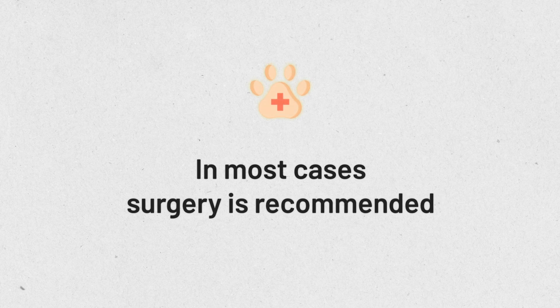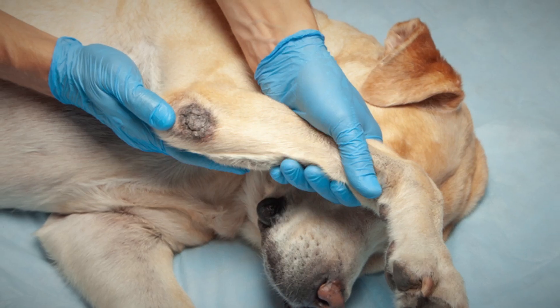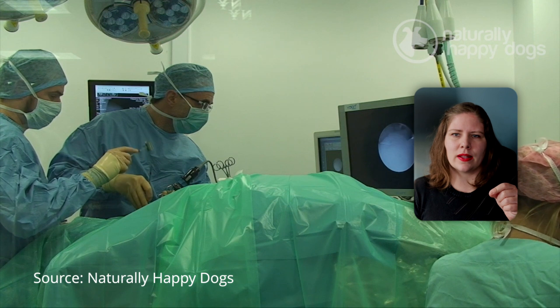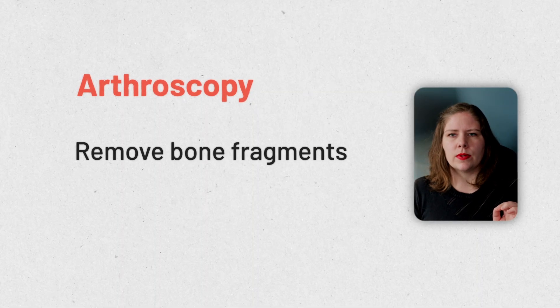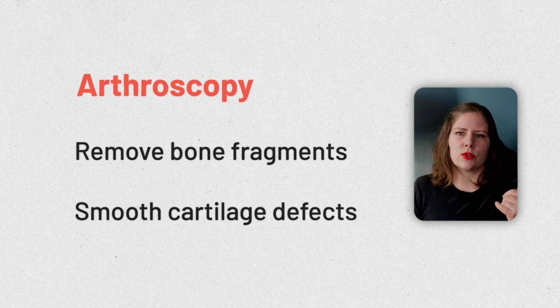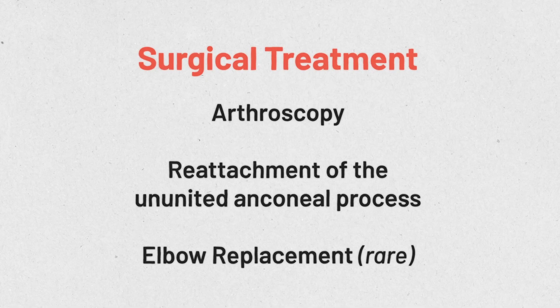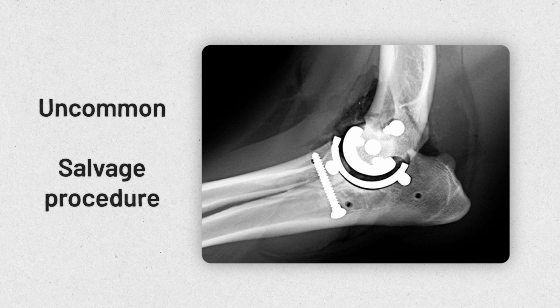In the vast majority of situations, surgery is helpful for these patients. There may be rare situations where we don't end up doing surgery — say if it's something incredibly mild, or if the elbow is so severely impacted that it's not a surgical candidate. Generally we will do this surgery via arthroscopy, using a small camera and tools to get into the joint and fix the problem. If there are bone fragments, removing those is very helpful. We can also smooth out any cartilage defects and make the joint function better than it was prior to surgery. Sometimes we can reattach an ununited anconeal process. Elbow replacement is available at very few places and is truly a salvage procedure not appropriate for the vast majority of animals, with significant risks and limited documentation in veterinary medicine.